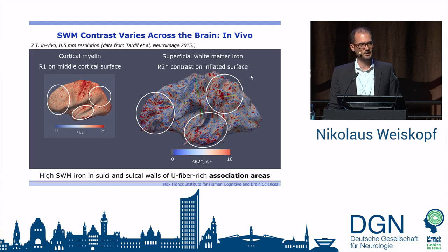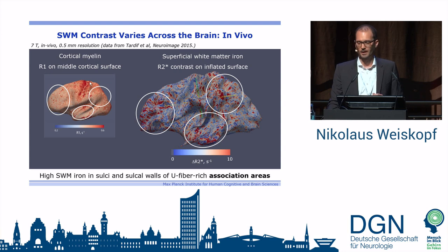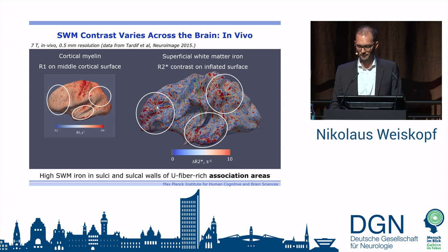Going back to the in vivo case: we had one interesting observation we can't fully explain at this point, but I'd appreciate comments. Wherever you have very high intracortical myelination, you have relatively little superficial white matter, and vice versa. So there seems to be an anti-correlation, and we are currently investigating that further.